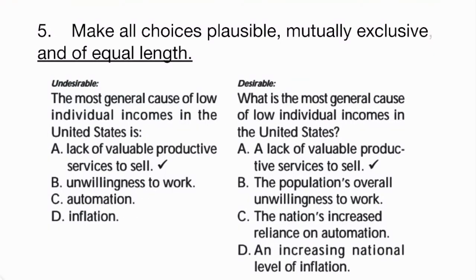We also cannot forget to make each of our choices an equal length. If we are not careful when we write traditional items and choices, we can accidentally make the correct answer the longest one. Many students have learned that when in doubt, they should pick the longest answer or the one with the most academic jargon. That's why a more desirable approach would be to make sure that each of the choices are of equal length — doing so takes a little bit of time and informal measurement with our eyes to make sure that each one is about the same length.